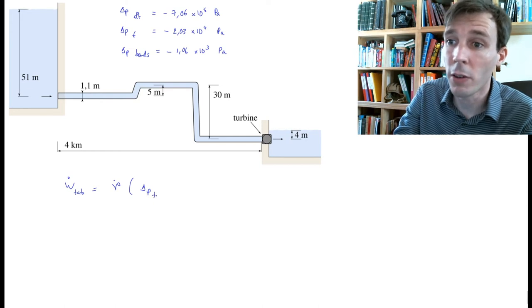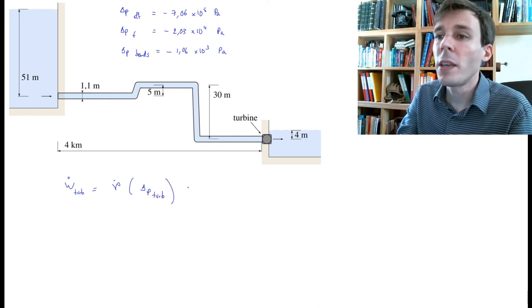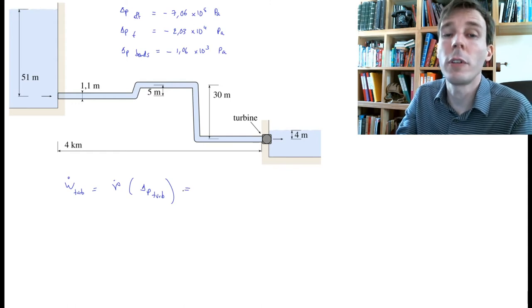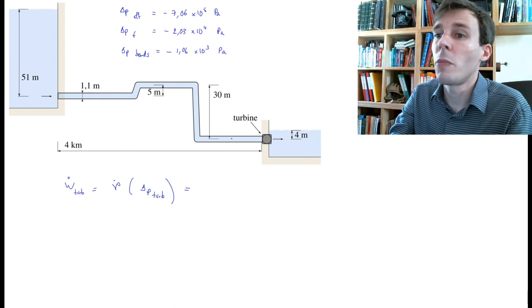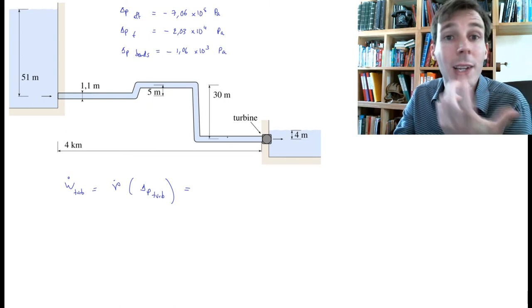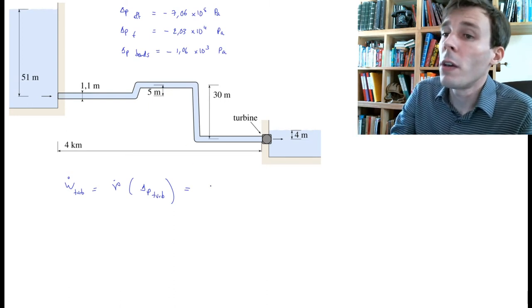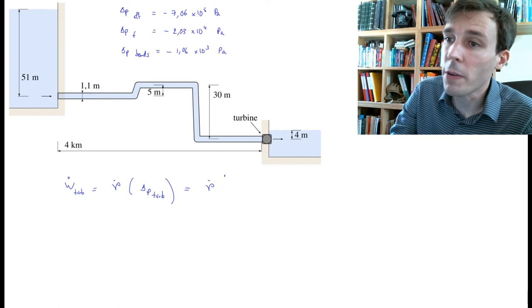And this delta P is made of the sum of all those other delta P's, but we have to add and subtract them in a clever way. The volume flow remains the same here, but the sum of those delta P's is...